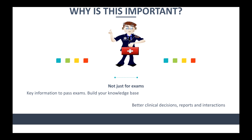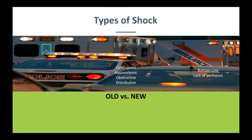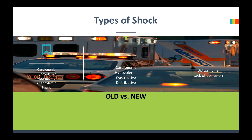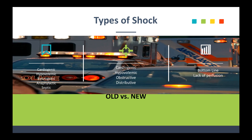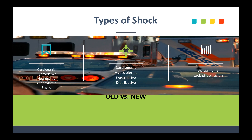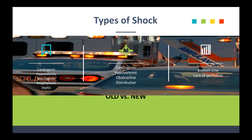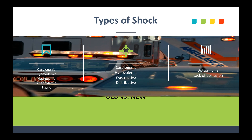We're going to talk about types of shock. You'll see different types — old versus new. The old way described them as cardiogenic shock, hypovolemic shock, neurogenic shock, anaphylactic, and septic.